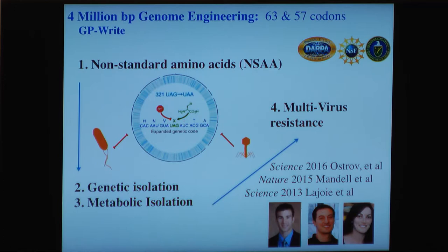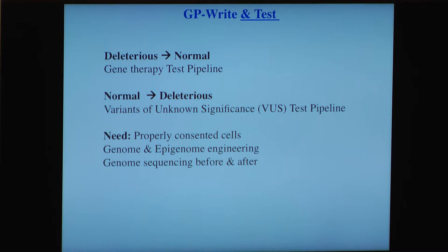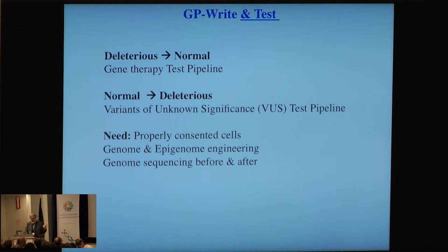Nilly will tell you more about engineering a four-million base-pair genome for four goals: non-standard amino acids, genetic and metabolic isolation (biocontainment — one of the goals of safe genomes), and multivirus resistance. It's very profound that these cells can be resistant to all viruses — even some we've never seen before. We want to use these cells in two directions: developing gene therapies where we take a deleterious allele and turn it into a normal one, and going from a normal allele to deleterious, so we can determine cause and effect for the millions of new unknown, possibly disease-causing alleles that we're finding as we sequence.